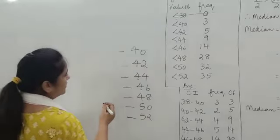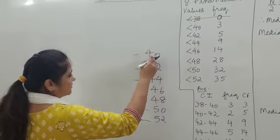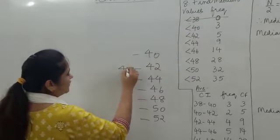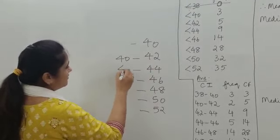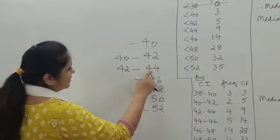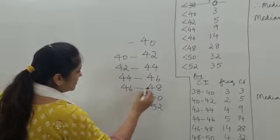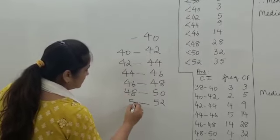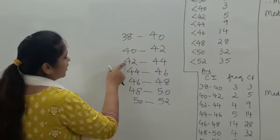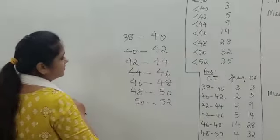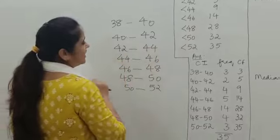Using these upper limits, we can find the lower limits. The upper limit of one class interval becomes the lower limit of the next. So if the upper limit is 40, that is the lower limit of the next class interval; if it is 42, that becomes the lower limit of the following one, and so on — giving us 46, 48, and 50. Following this pattern, the first class interval starts at 38, giving us 38 to 40. This is how we generate the class intervals using the less-than values.